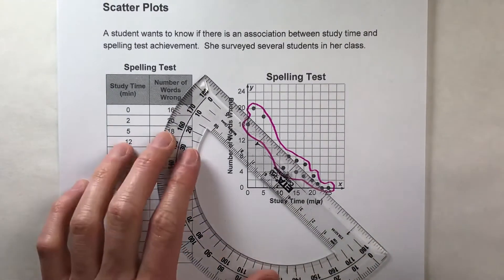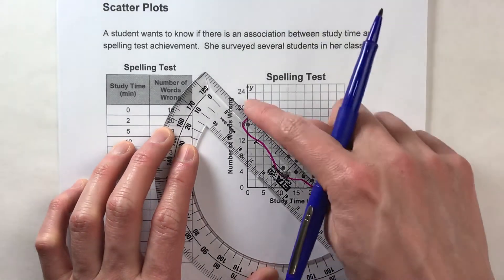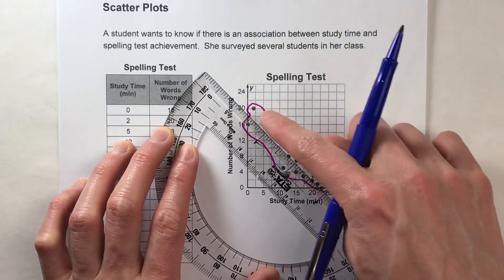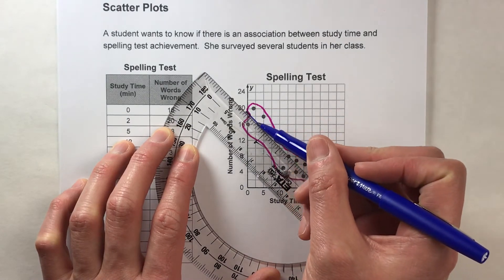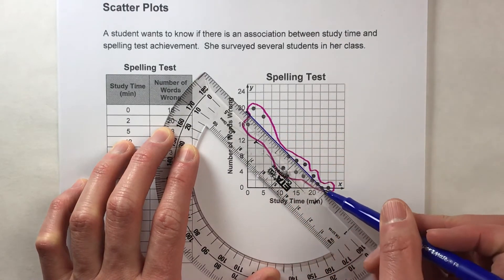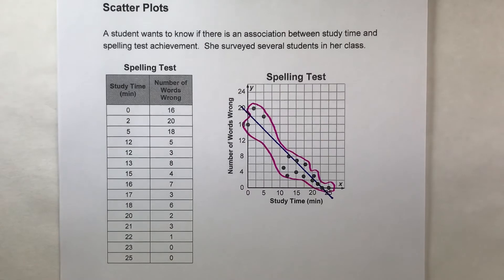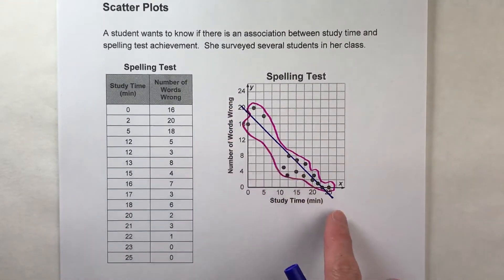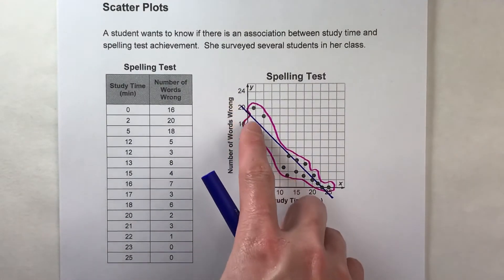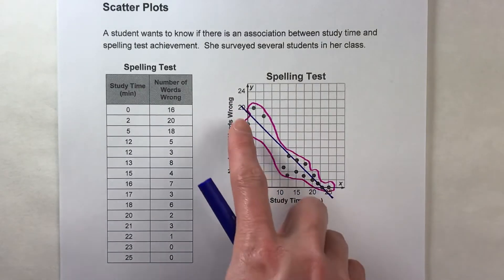Notice how much easier it is to see where the trend line is going to go once the points are outlined. With my straight edge — that looks about right. See how about half the points are above and half are below? So this is going to be my trend line for the data, representing the average of our results.